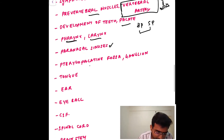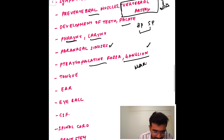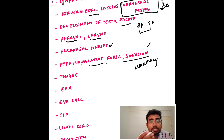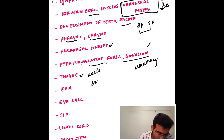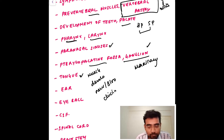For the paranasal sinuses, cover the typical four sinuses — you will have already read the maxillary sinus and its osteology. For the pterygopalatine fossa and pterygopalatine ganglion, understand what enters and is present there, including the maxillary nerve. For the tongue, study the muscles, its development, nerve supply, blood supply, and clinical aspects.